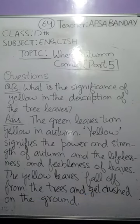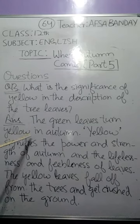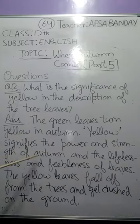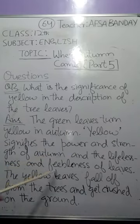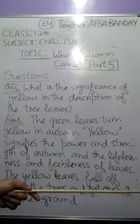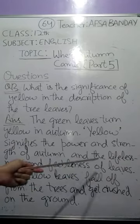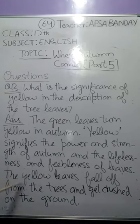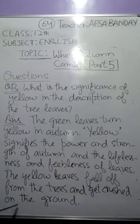Question number thirteen: what is the significance of yellow in the description of the trees? With the coming of autumn, the green leaves turn yellow. Yellow signifies the power and strength of autumn and the lifelessness and feebleness of leaves. When they turn yellow, they become feeble and lifeless, then fall off from the trees and get crushed underfoot when they are on the ground.